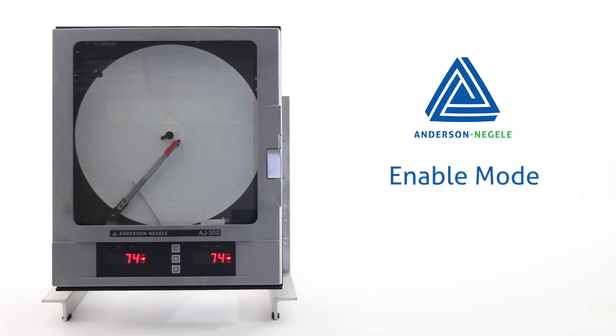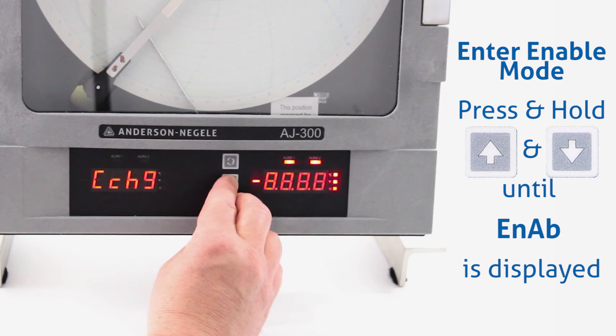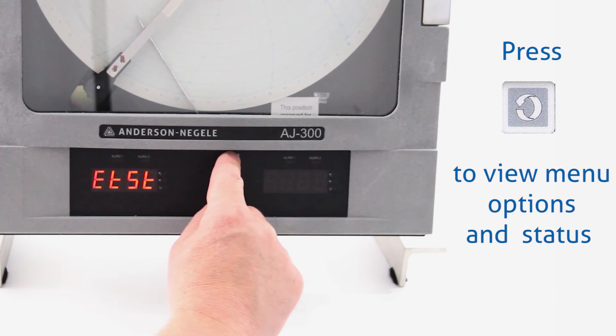Now we're going to go over the enable mode. You'll need to press the up and down arrow keys both at the same time. You're going to see a lot of lights come on on the display. The pens are going to move around and then eventually the display is going to show E-N-A-B. When you see that, you can let go of the keys and now you can use the scroll key to go through and see which menus are turned on or off.